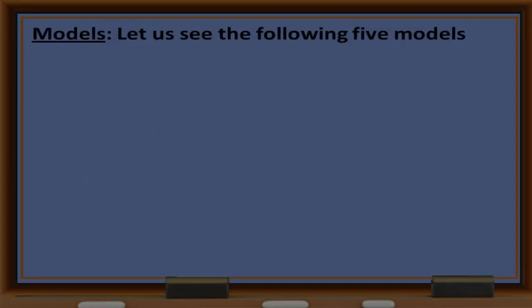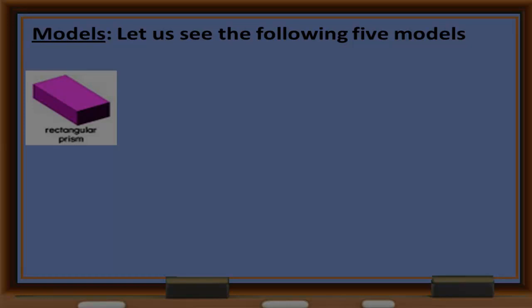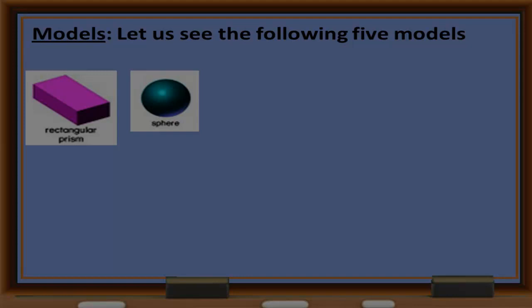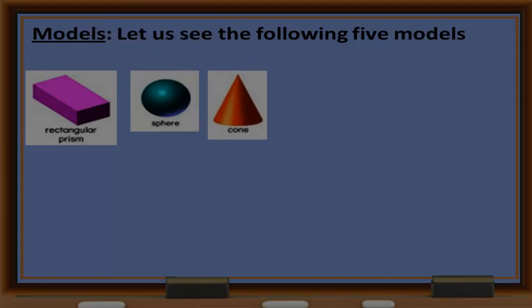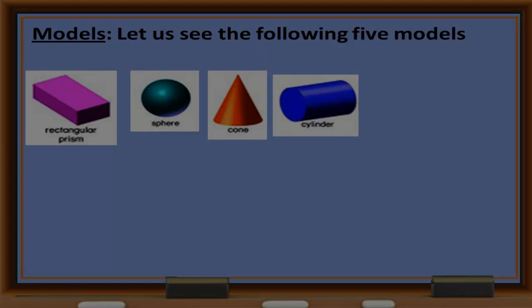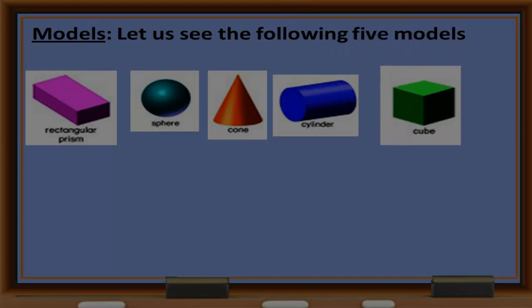Let us see the following five modules. The first one is called Rectangular Prism. The second one is called Sphere. The third one is called Cone. The fourth one is called Cylinder. The fifth one is called Cube.